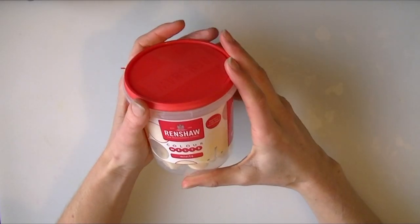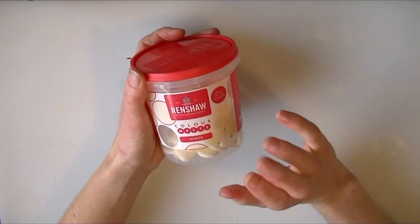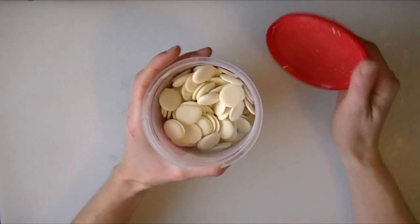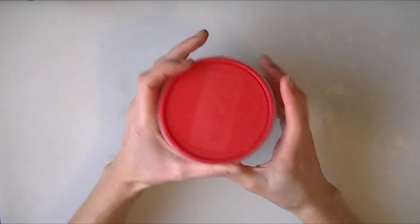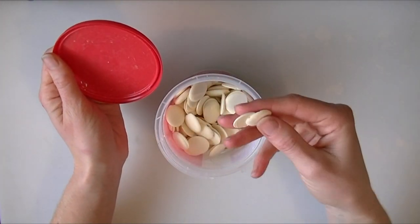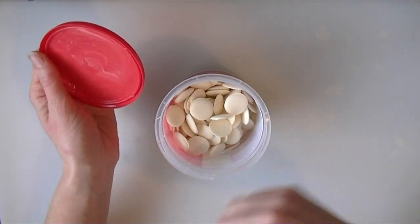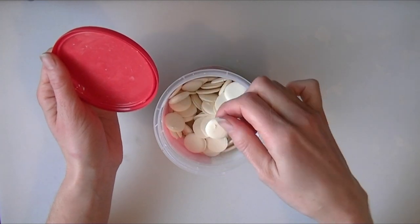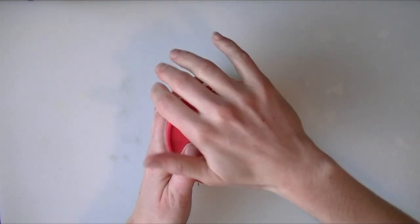So to make the flesh colour for the heads of our cake pops we're going to use some white colour melts. I've got the Renshaw ones here which are nice and easy to just stick in the microwave. What I'm going to do is melt the white ones and then just add a small amount of pink ones to them once they're melted. Keep stirring them in, let them melt until I'm happy with the colour. But mainly white is the main colour we need for this.